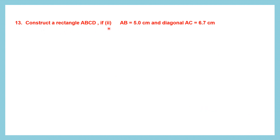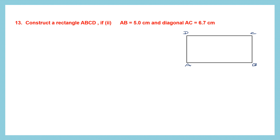Construct a rectangle ABCD if this time a side and a diagonal have been given. So how do we construct a rectangle when a side and a diagonal are given? First the rough figure. We have ABCD, and we've been given AB which is 5.0 centimeters. The opposite sides are equal, so AB and CD are 5 centimeters each. Now we've been given AC is 6.7 centimeters — that is the diagonal. So AC is 6.7 centimeters. Let's also remember that these are 90 degree angles.